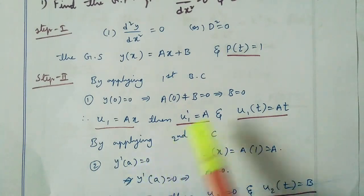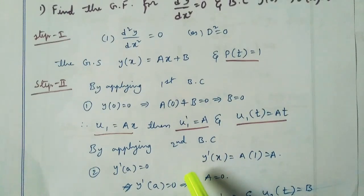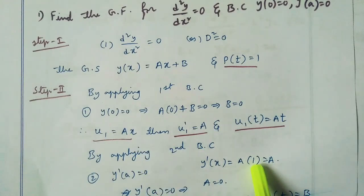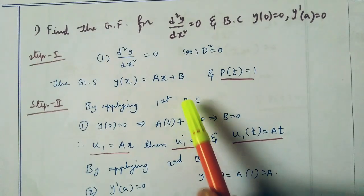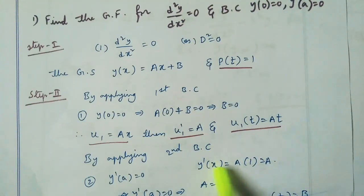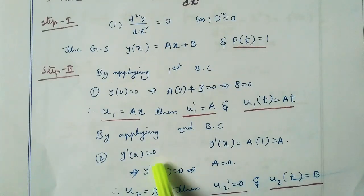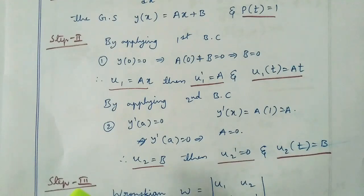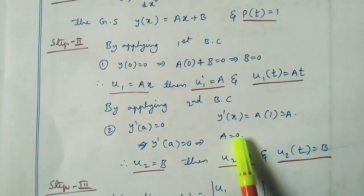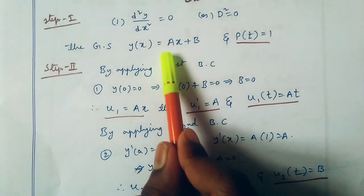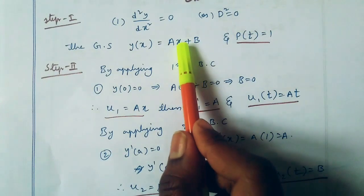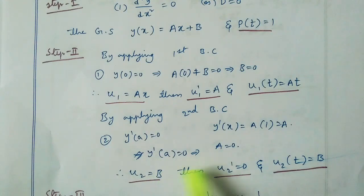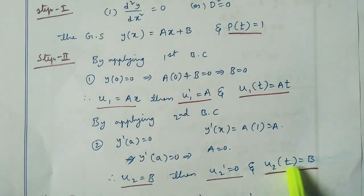By applying the second boundary condition y'(a) equal to 0: y dash of x is equal to a, so y dash of a equal to 0, that implies a equal to 0. Therefore, by substituting a equal to 0, u2 equal to b. Then u2 dash is equal to 0, and u2(t) equal to b.